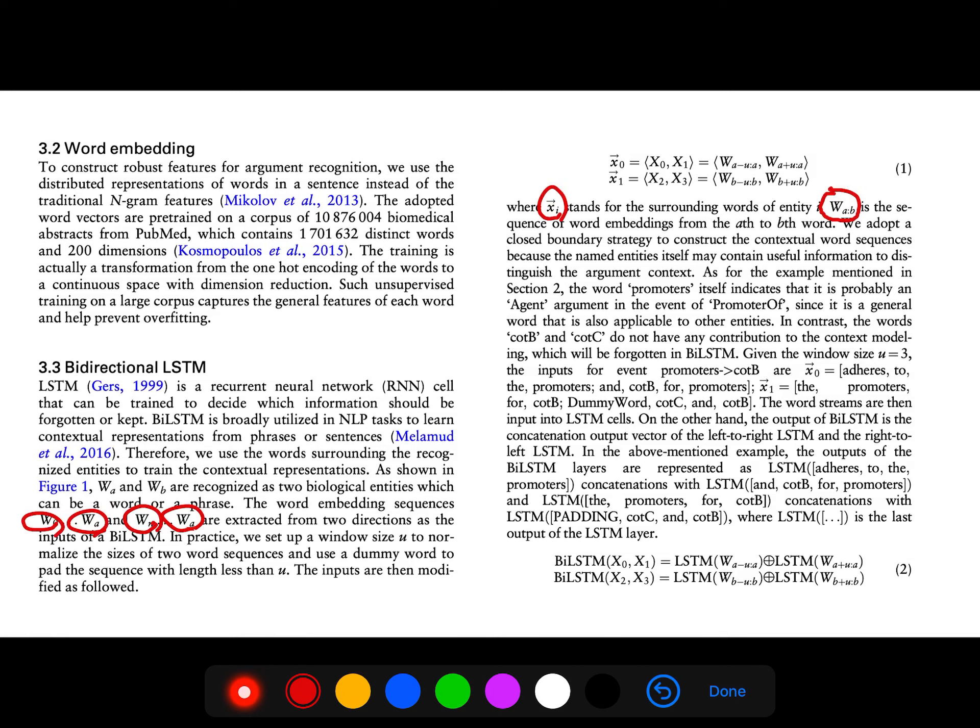And we adopt a close boundary strategy to construct the contextual word sequences because the named entities itself may contain useful information to distinguish the argument context. So because it's bi-LSTM, we use both directions.